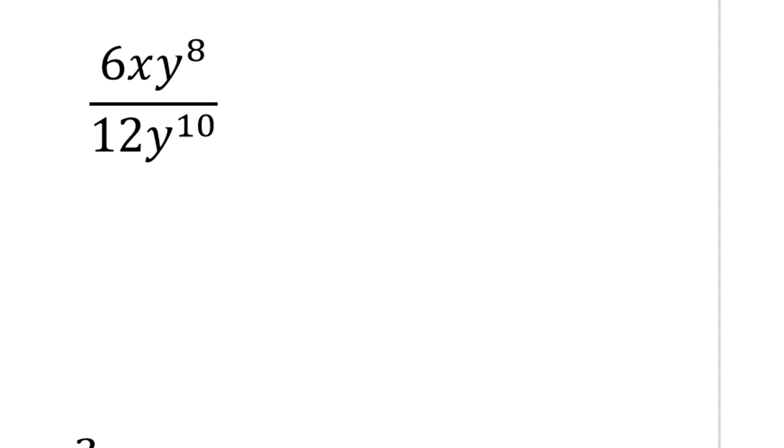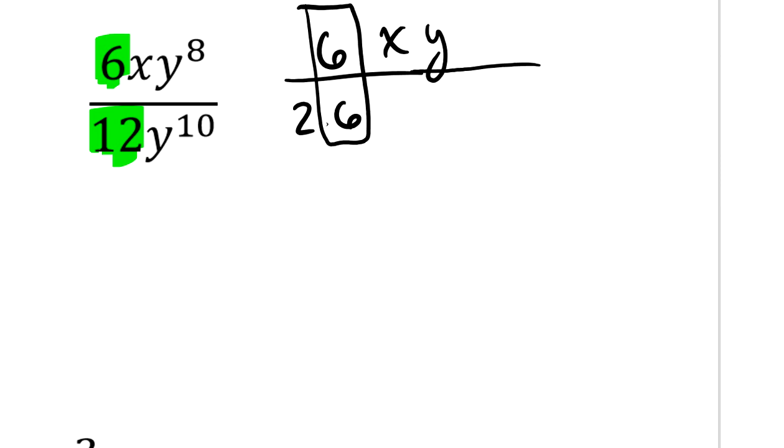In question part B, I can see that I've got 6 over 12. Well, there's clearly a giant 1 there. And I could write it as 6 over 2 times 6, so there's a 1. So I'm going to be left with a 2 in the denominator. Let's look at this a little bit further. I've got an x and a y to the 8th. And then down in the denominator, I've got y to the 10th power.